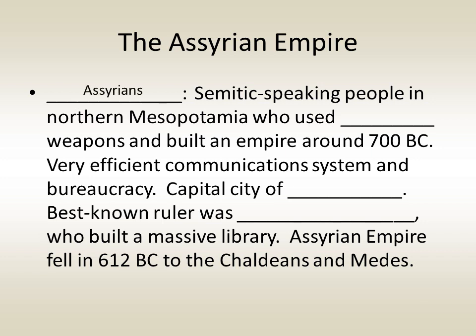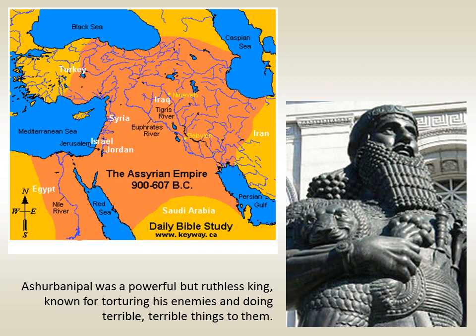The Assyrians were a Semitic-speaking people in northern Mesopotamia who used iron weapons and built an empire around 700 BC. They had very efficient communications systems and a bureaucracy. The capital city of the Assyrian Empire was Nineveh, and their best-known ruler was Ashurbanipal, who built a massive library there. The Assyrian Empire fell in 612 BC to the combined efforts of the Chaldeans and the Medes. Ashurbanipal was a powerful but ruthless king known for torturing his enemies.